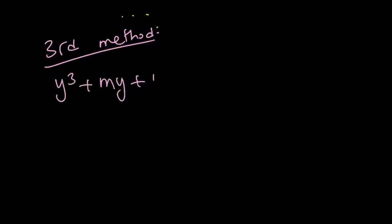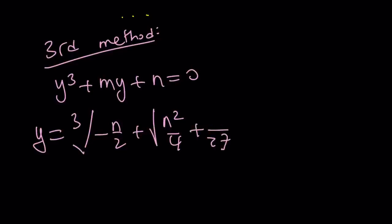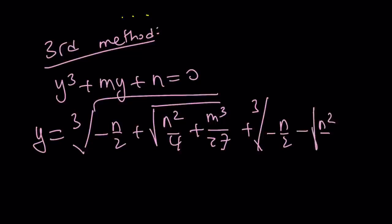If you have an equation like this, y cubed plus m y plus n equals 0, you can find the y value from here as the cube root of negative n over 2 plus the square root of n squared over 4 plus m cubed over 27. Plus, we pretty much write the same thing, but this time we're going to use a minus sign. n squared over 4 plus m cubed over 27.